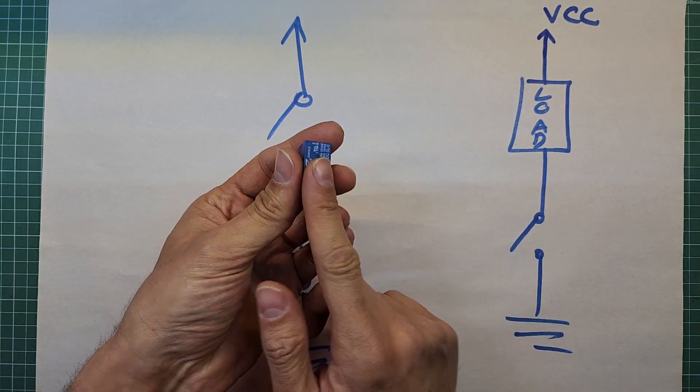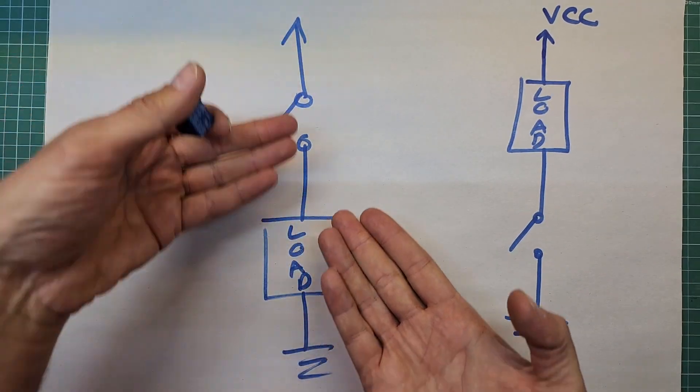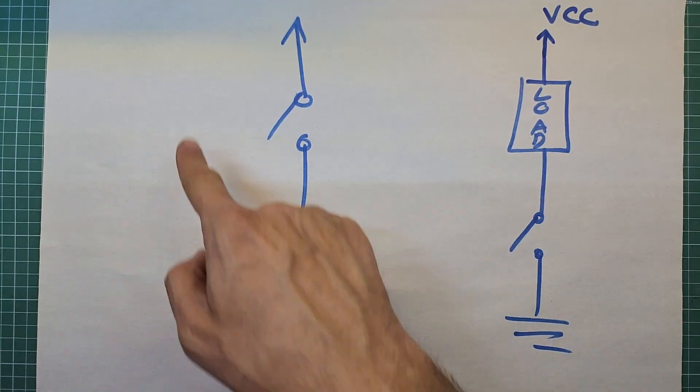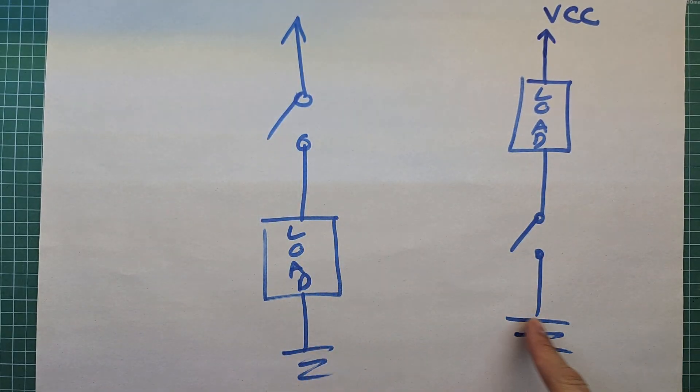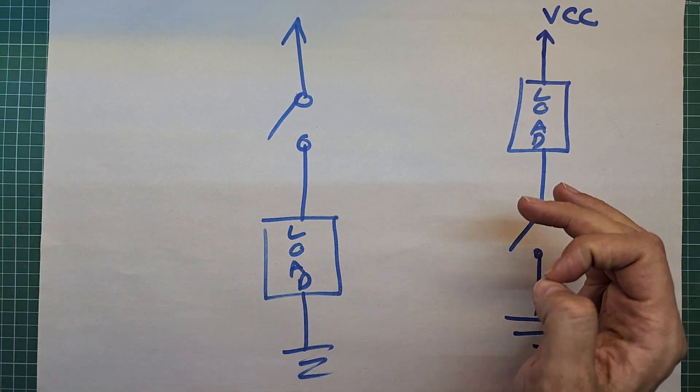For a mechanical switch like a relay to work properly it can be placed between the load and the power supply on either the high side or the low side. But if you need to use a transistor as a switch, it's important to place it on the correct side. Which side is better — high side or low side? The answer depends on the transistor type, which leads us to the differences between N-channel and P-channel.